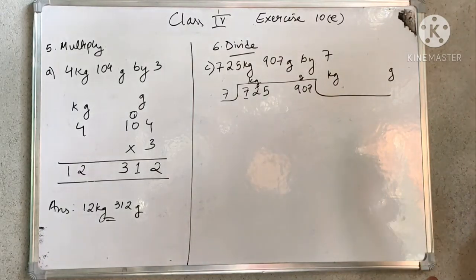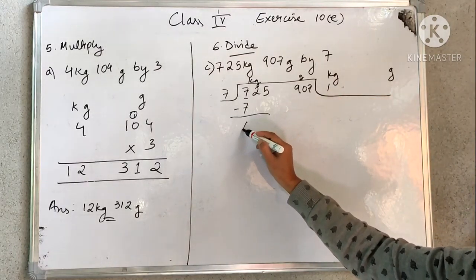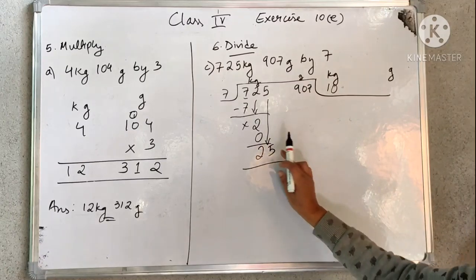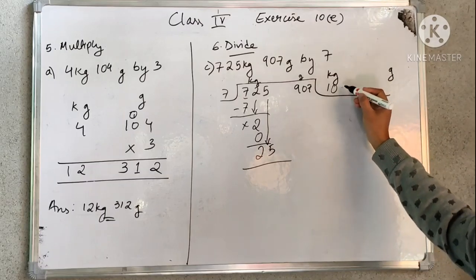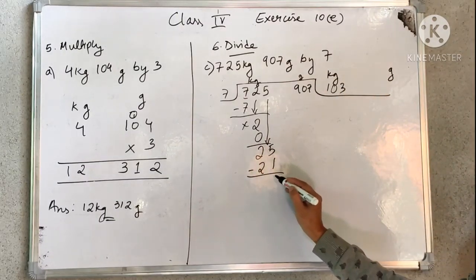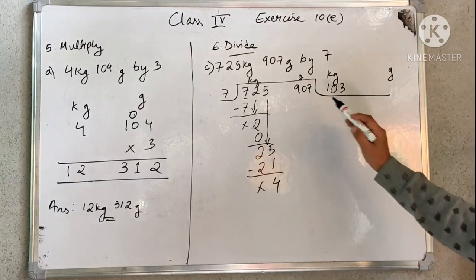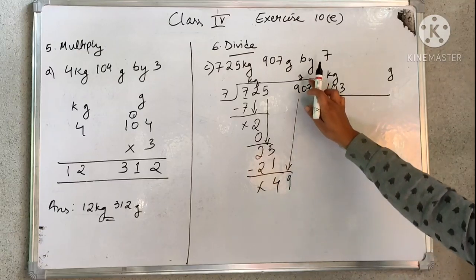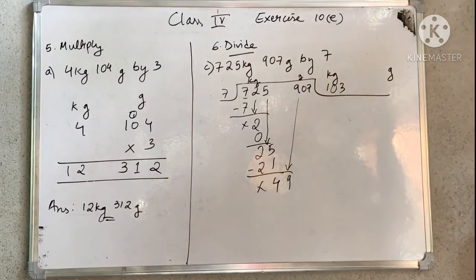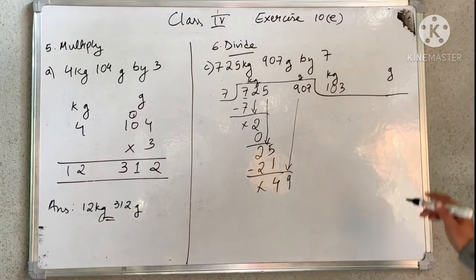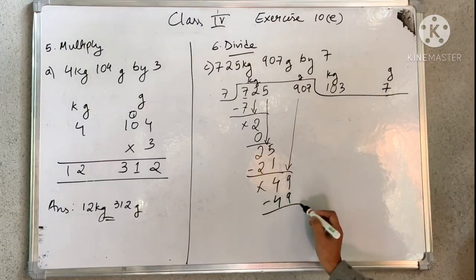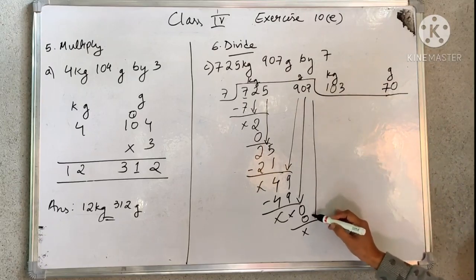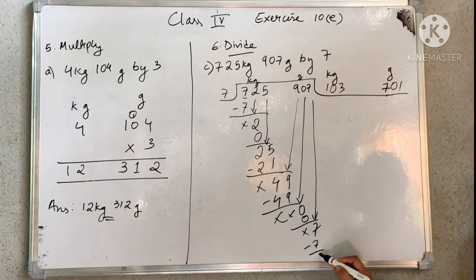So 7 goes into the first digit — 2 comes down, 2 is less than 7, so we add 0 here. Then 5 comes down, so we have 25. We take 7 threes are 21, so 5 minus 1 is 4. Now bring down the next number — 9 comes down. We have brought something from the gram part, so in the quotient we start writing in the gram portion. 7 sevens are 49, so 0 comes down. Then 7 comes down — 7 ones are 7. In this manner you have to solve.